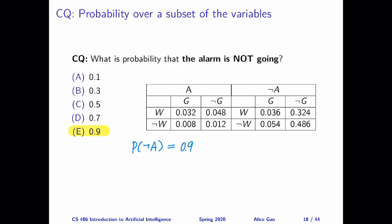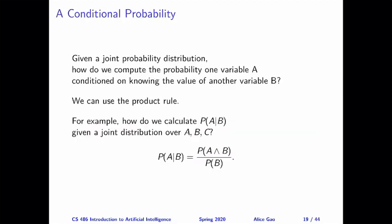Those are all the practice questions for the sum rule. Let's now move on to the product rule. One way we can use the product rule is to calculate a conditional probability — the probability of one variable, say A, conditioned on knowing the value of another variable, say B. To calculate this, we can use the product rule.